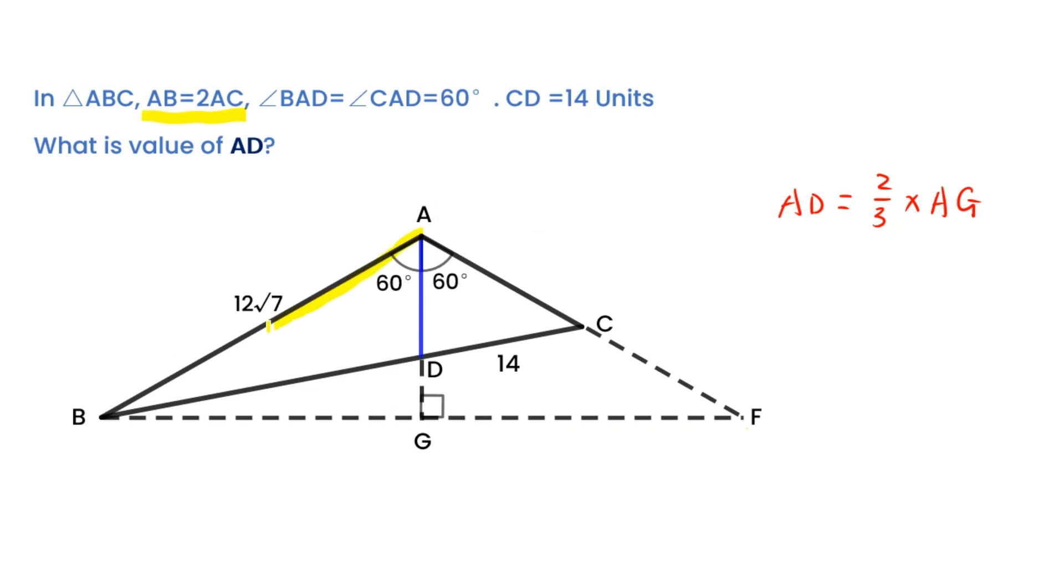Triangle ABF is also a 30, 60, 90 degrees triangle. So AG equals to half of AB. We can calculate AD equals to 4 times square root 7.